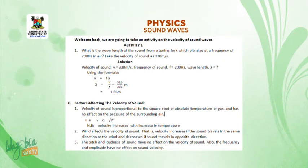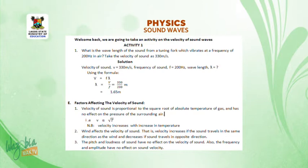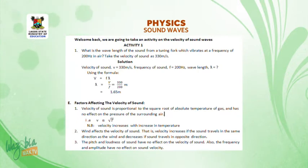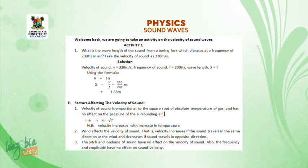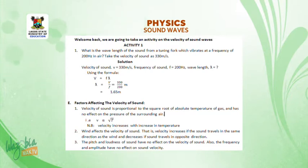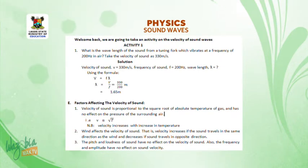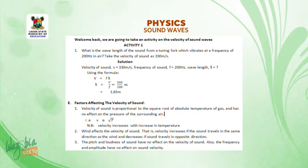Factors affecting the velocity of sound. Number 1: velocity of sound is proportional to the square root of the absolute temperature of the gas and has no effect on the pressure of the surrounding air. That is, V is proportional to the square root of T, meaning that velocity increases with increasing temperature. Number 2: wind affects the velocity of sound. That is, velocity increases if the sound travels in the same direction as the wind, and decreases if the sound travels in the opposite direction.